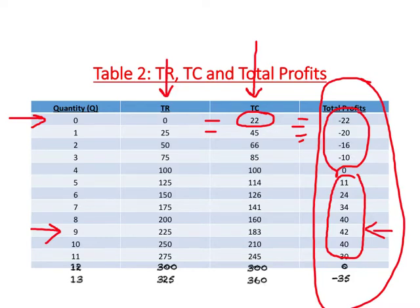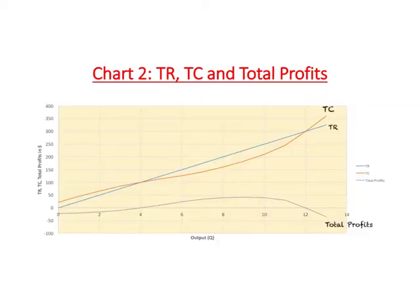Wherever total profits are positive, revenue exceeds cost, meaning the firm is making profits. For the firm, 9 units of output is the best level of output because this is where the firm maximizes total profits. Based on the information from the table, we can draw total revenue, total cost, and total profits for the firm, with output (Q) on the horizontal axis and financial information in dollars on the vertical axis.